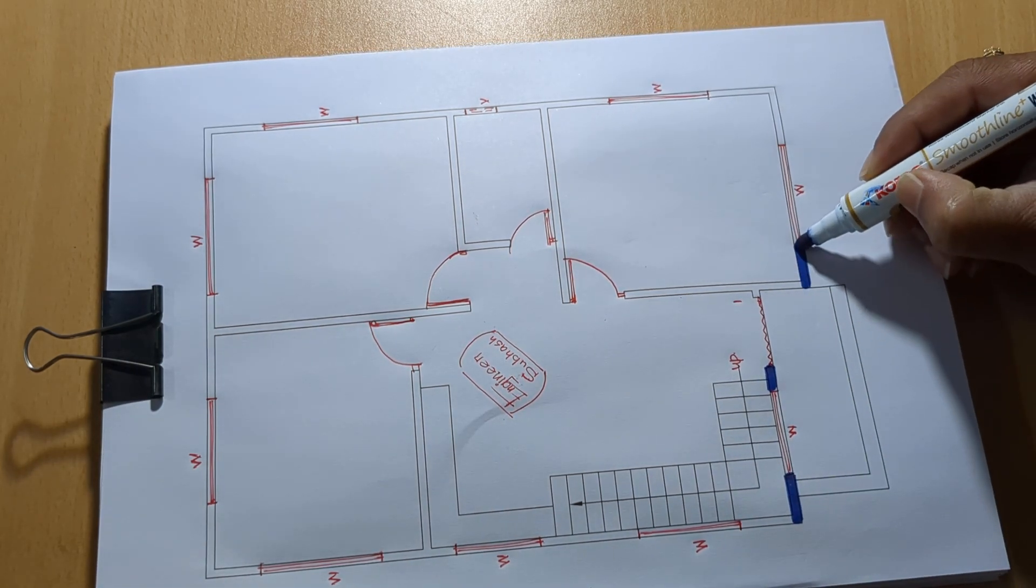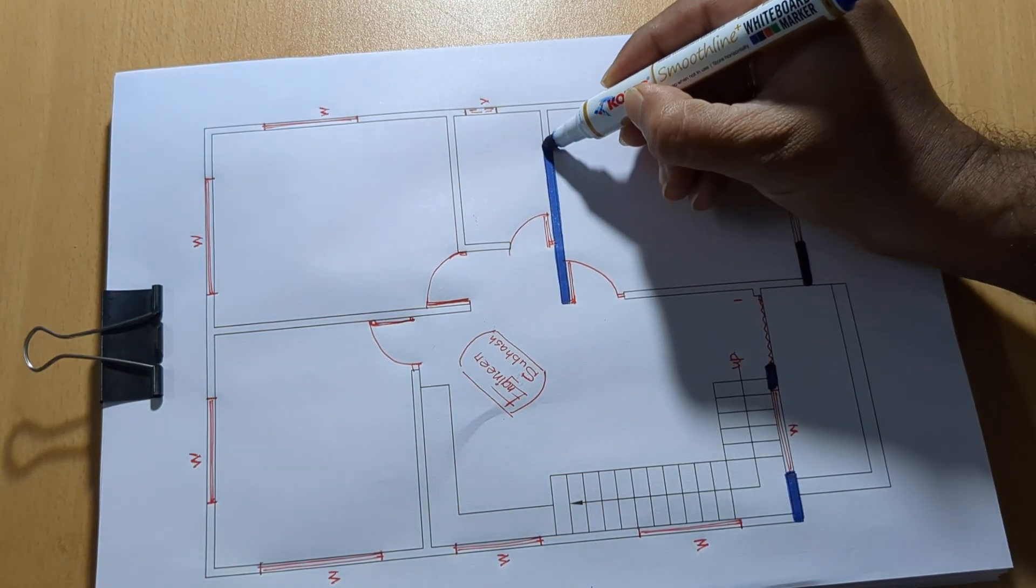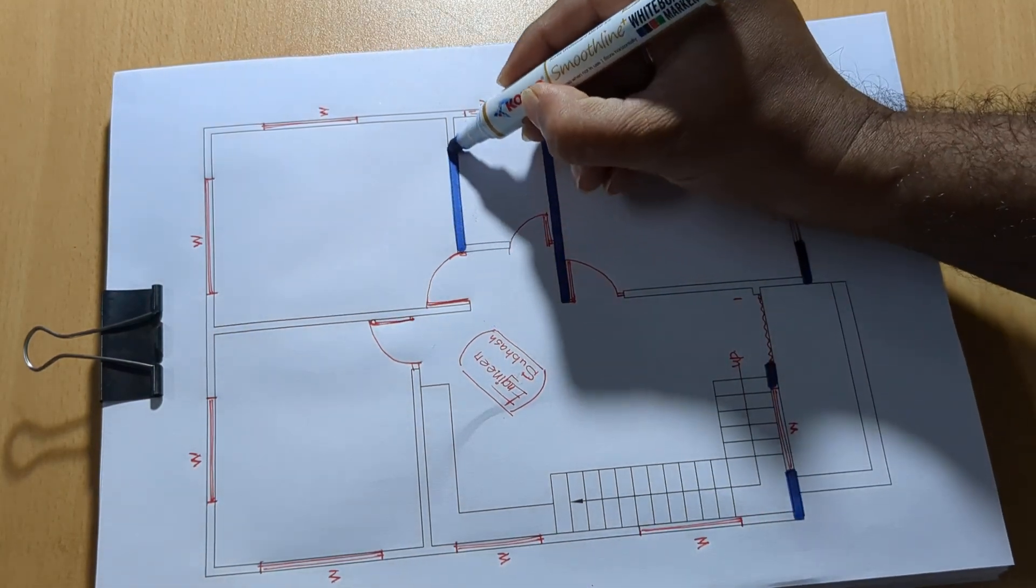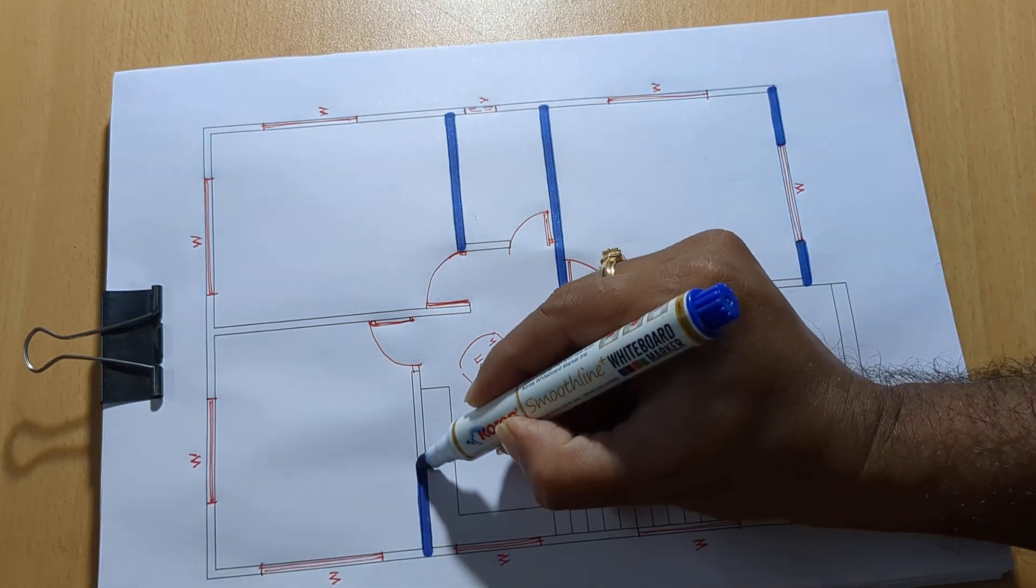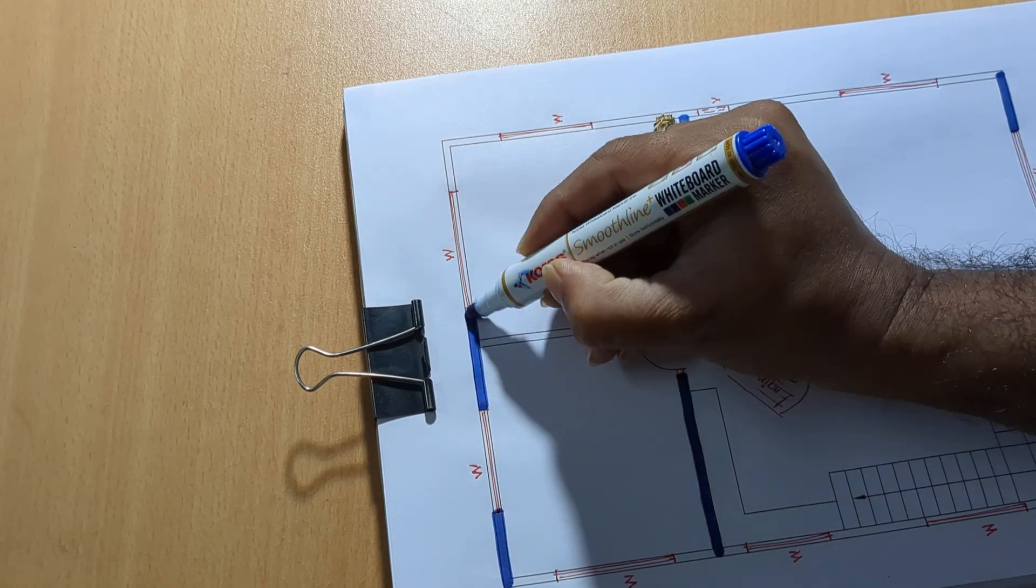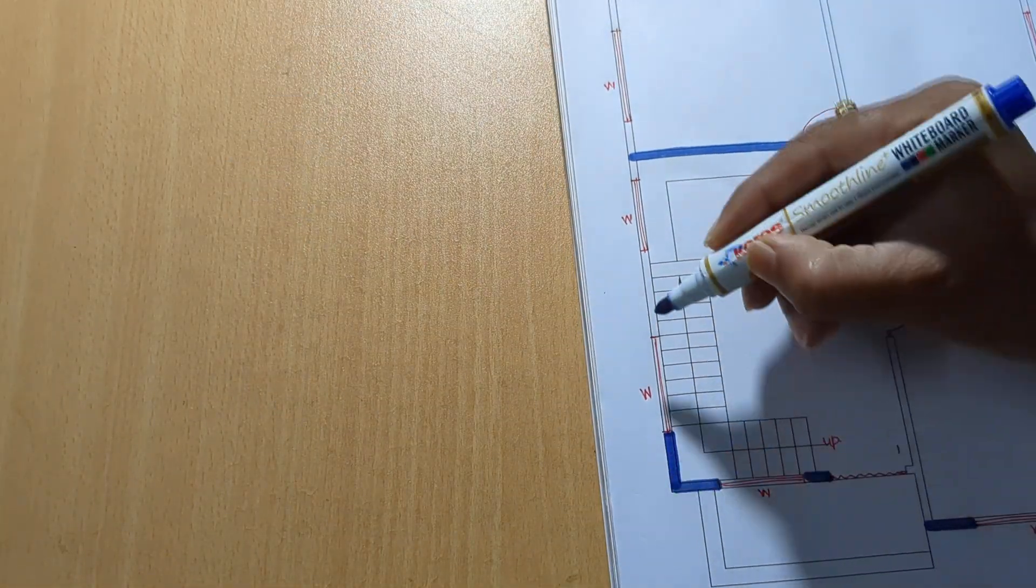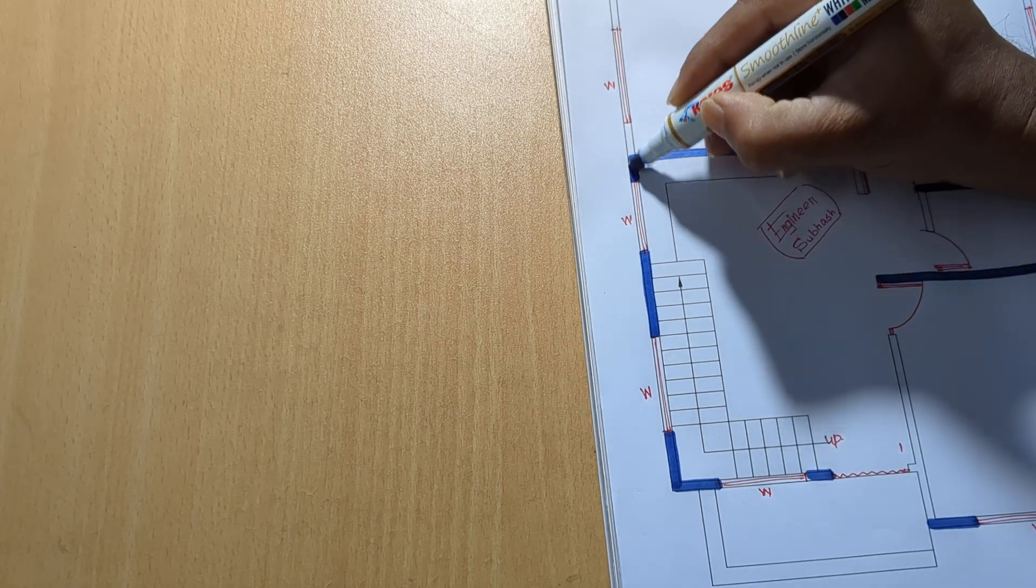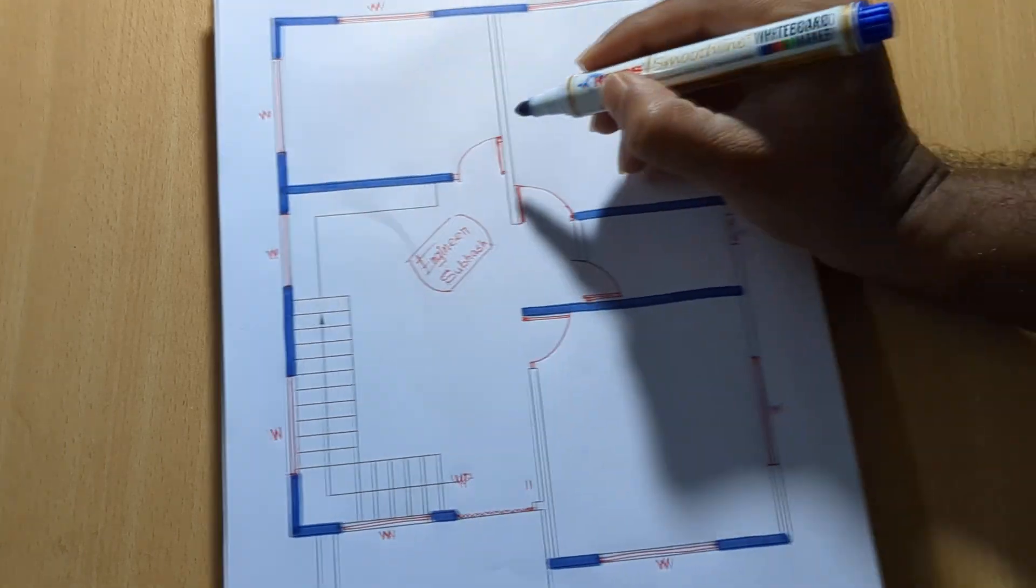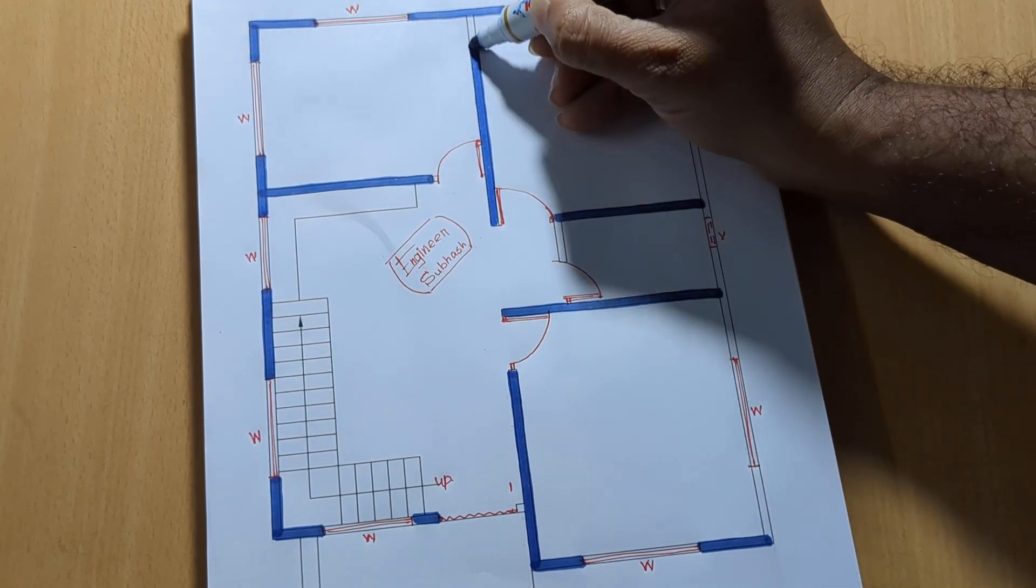Wall 125mm partition wall, partition wall, 5 inch brick wall.